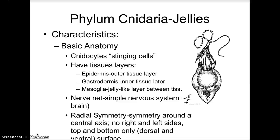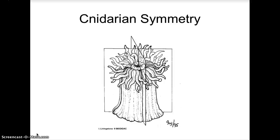Cnidarians are named for special cells called nidocytes, which are stinging cells. They have tissue layers that include the epidermis (the outer tissue layer), the gastrodermis (the inner tissue layer), and the mesoglea, which is a jelly-like layer between the two tissue layers. They have a nerve net, which is a simple nervous system without a brain. They have radial symmetry — symmetry around a central axis — meaning no right or left sides, just a dorsal and ventral surface.